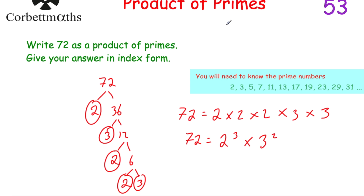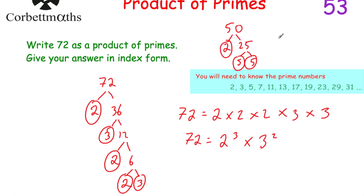To give you a bit of practice: can you write 50 as a product of primes, and give your answer in index form? To write 50 as a product of primes, I'm going to choose 2 times 25. Circle the 2. In terms of 25, that's 5 times 5 — circle both, because they're both prime. So 50 = 2 × 5 × 5. Check: 2 × 5 = 10, × 5 = 50. In index form: 2 × 5². So 50 = 2 × 5².